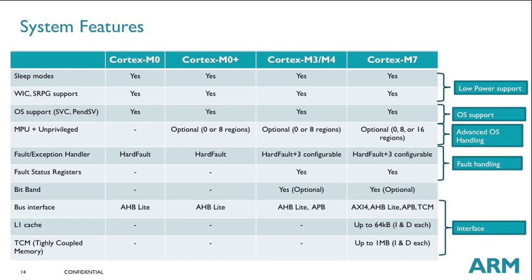In terms of bus interfaces, all cores have a simple AHB-Lite master, while on Cortex-M3, M4, and M7 there is also an APB interface. On the Cortex-M7, because of its higher performance and operating frequency, an AXI interface is also present, as well as interfaces to tightly coupled fast memories. Additionally, the Cortex-M7 supports up to 64 KB each of instruction and data cache, there to support the higher operating frequencies.